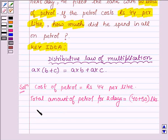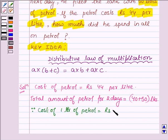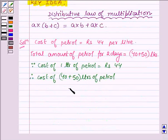And since cost of one litre of petrol is equal to Rs. 44, therefore, cost of 40 plus 50 litres of petrol is equal to Rs. 44 into 40 plus 50.